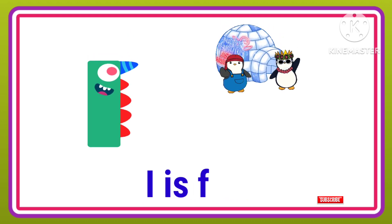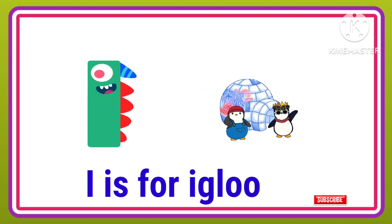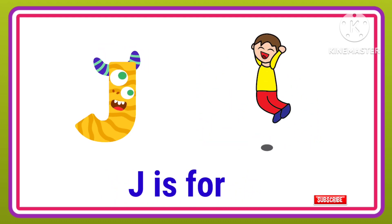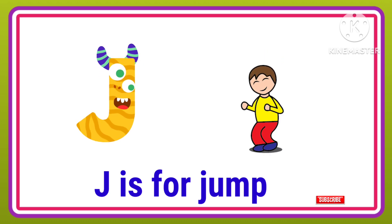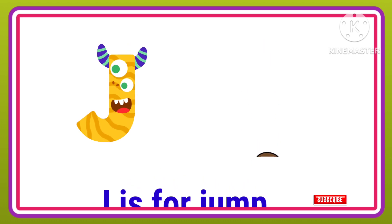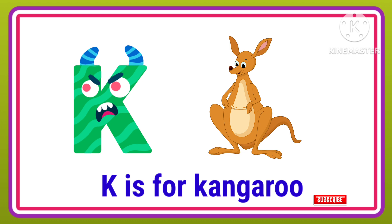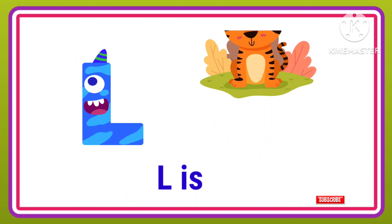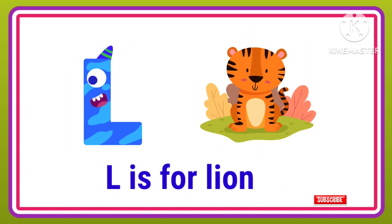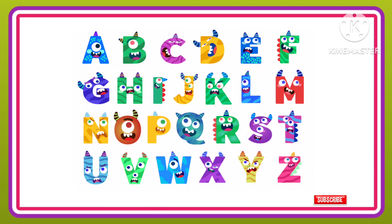I is for Igloo, I-I-Igloo. J is for Jump, J-J-Jump. K is for Kangaroo, K-K-Kangaroo. L is for Lion, L-L-Lion.